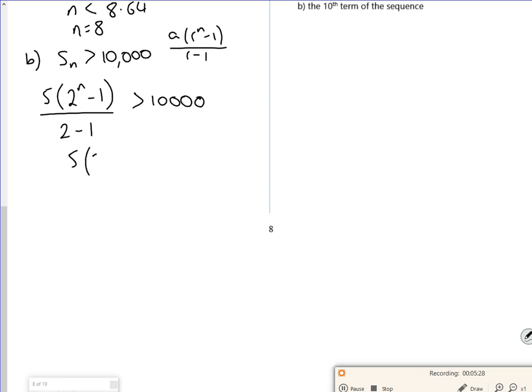Divide by 5, 2 to the n minus 1 is greater than 2000. So if you divide through by 5, that's going to be 2000. Add on the 1, so 2 to the n is greater than 2001. Now I've got choices. I can take ln or I can do log to base 2.